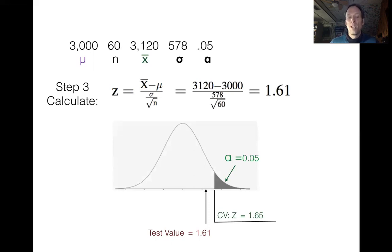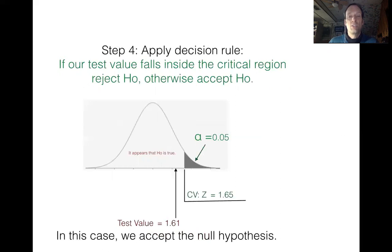Here's how we do it. In step 4, we're going to apply a decision rule. That decision rule states that if our test value lands inside the critical region, then we have enough evidence to reject the null hypothesis. Otherwise, we're going to accept the null hypothesis. In our case, because the 1.61 landed outside the critical region, we're going to accept the null hypothesis.